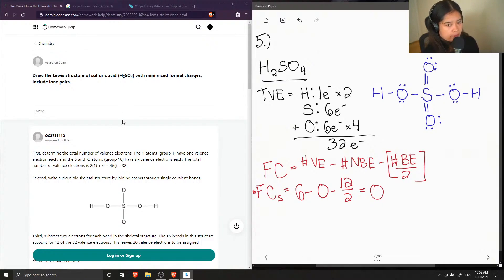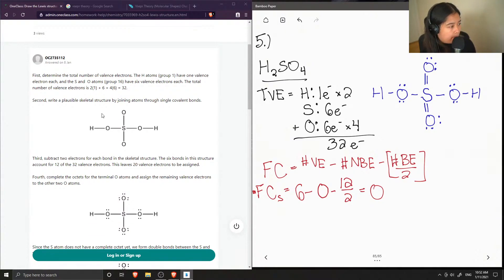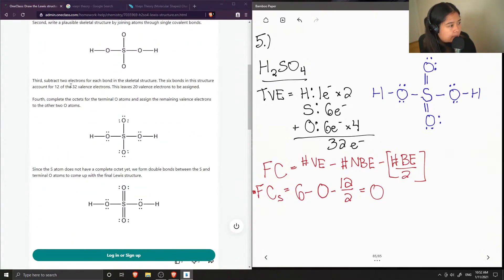So now let's see what the junior tutor said. First, determine the total number of valence electrons. Hydrogen atoms have one valence electron each, and sulfur and oxygen have six. Total number is 32. Second, we write a plausible skeletal structure by joining atoms through single covalent bonds. Yep. Third, subtract two electrons for each bond in the skeletal structure. And the six bonds in this structure count for 12. So this leaves 20 valence electrons to be assigned.